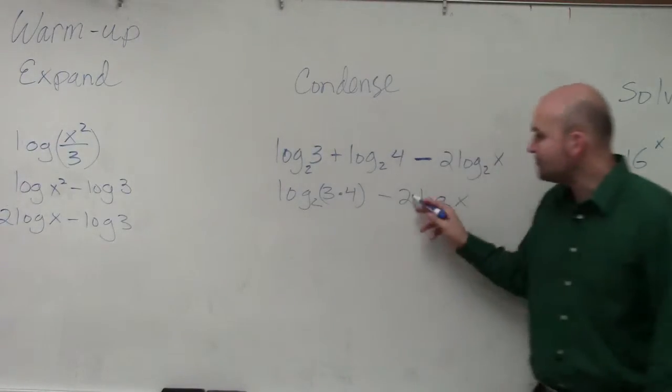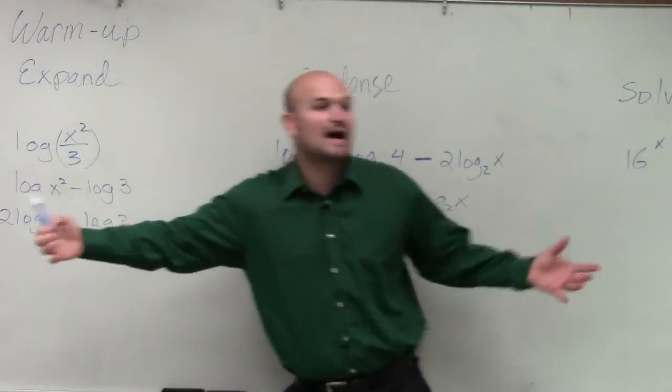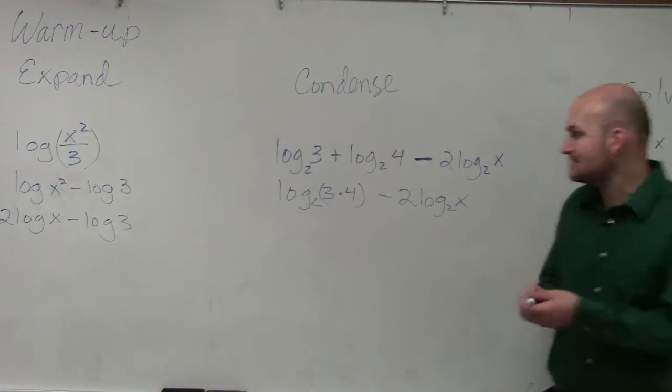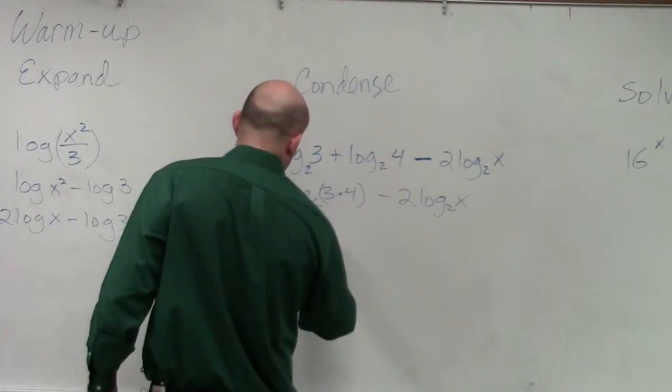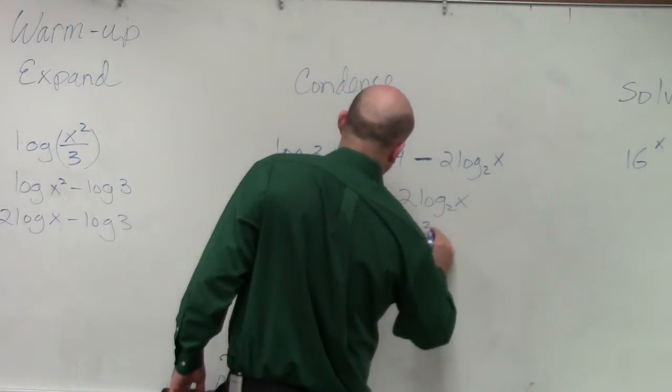And then the other thing is, remember, over here, when I'm expanding, I take the exponent and put it in front. Well, now when I'm condensing, I take whatever's in front and I rewrite it as the exponent. So therefore, I have log base 2 of 12 minus log base 2 of x squared.